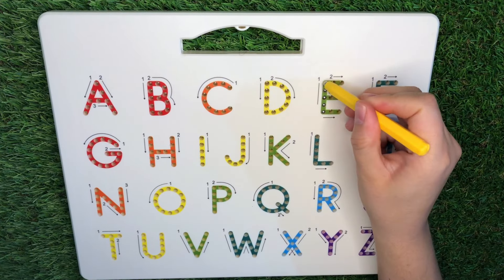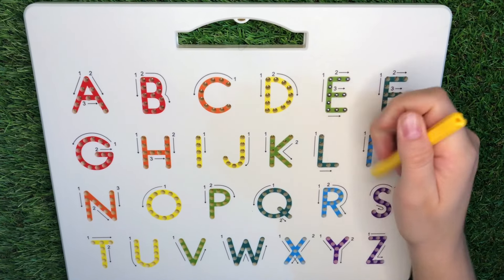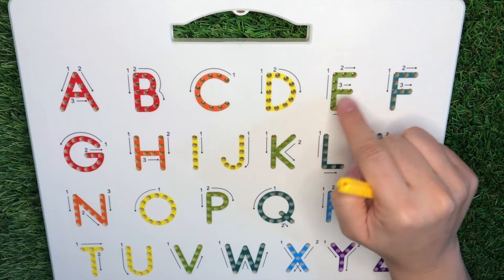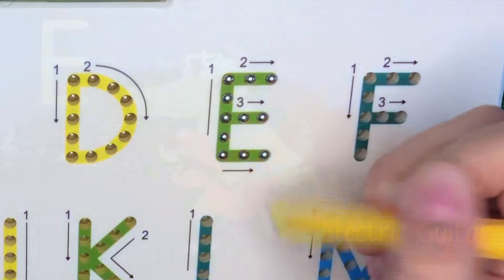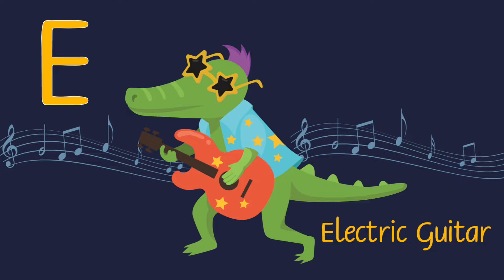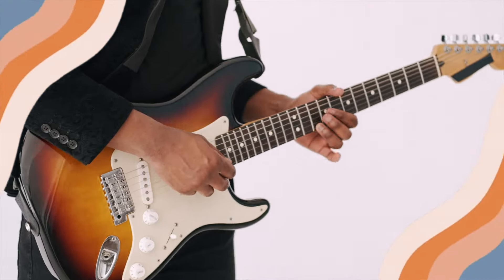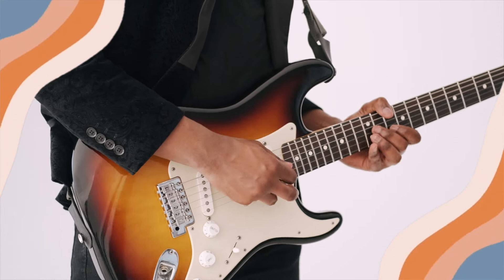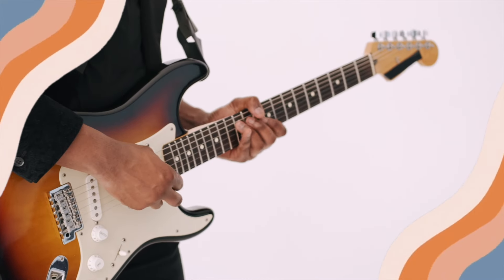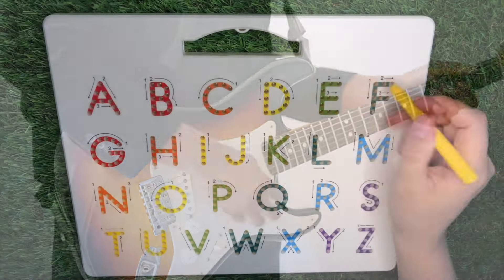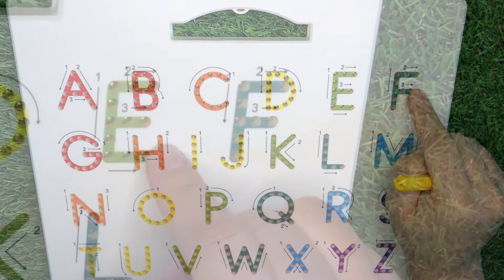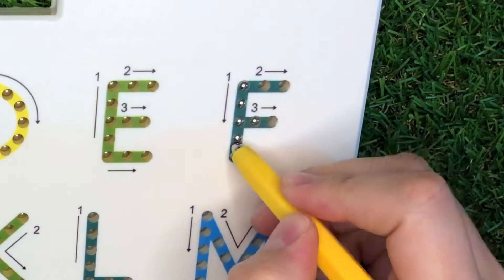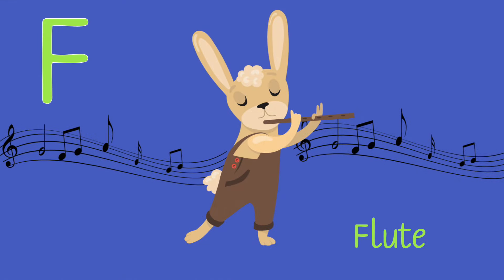E is for... Electric Guitar. F is for... Flute.